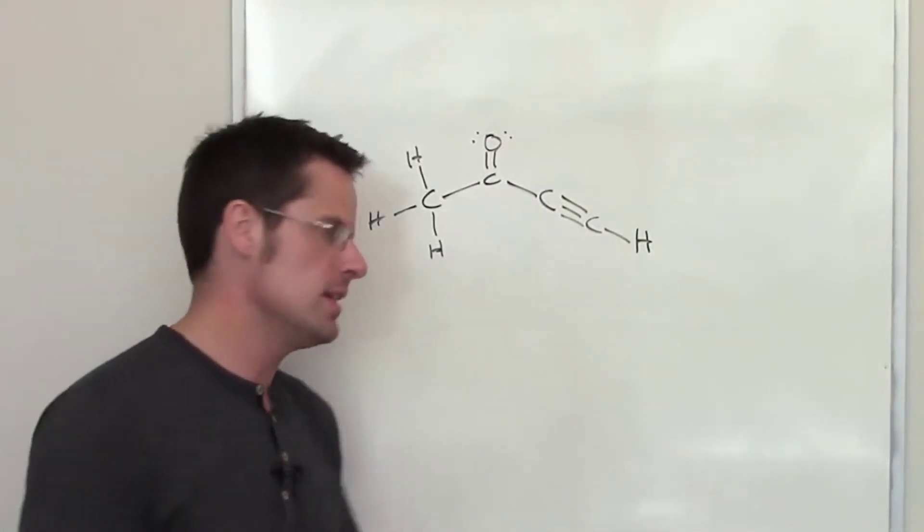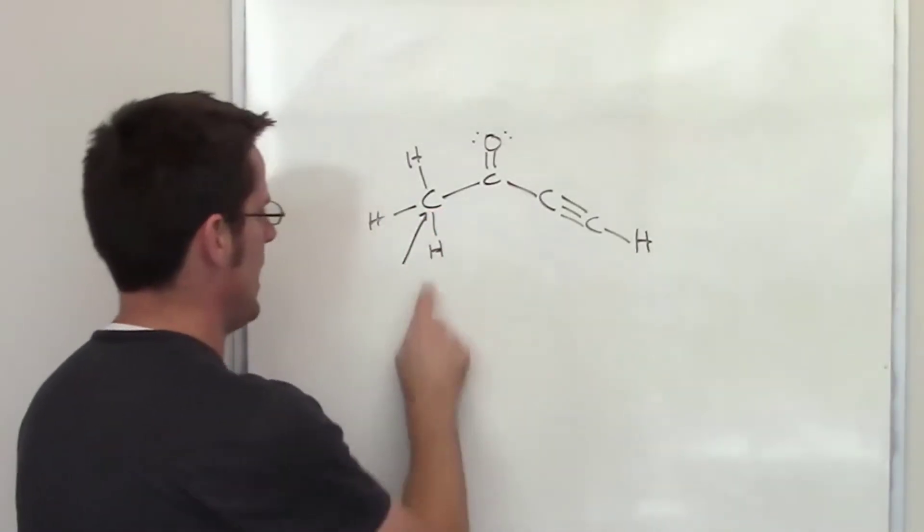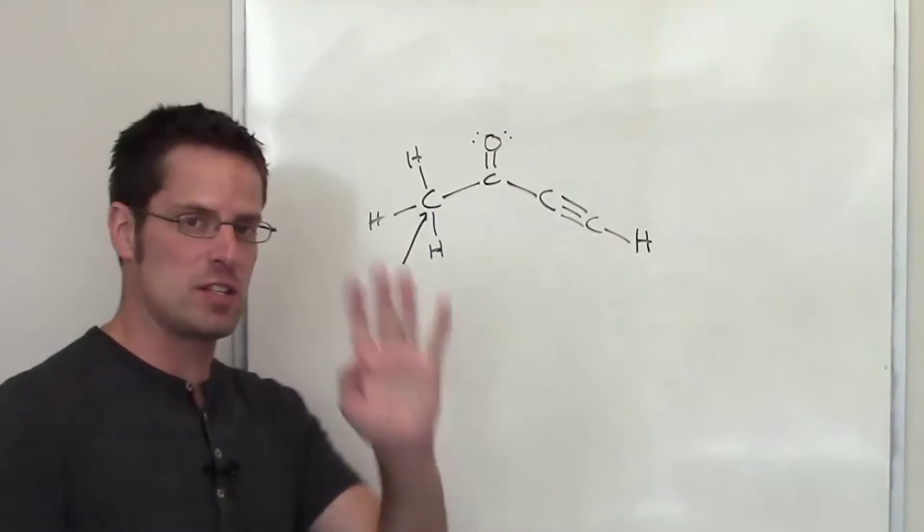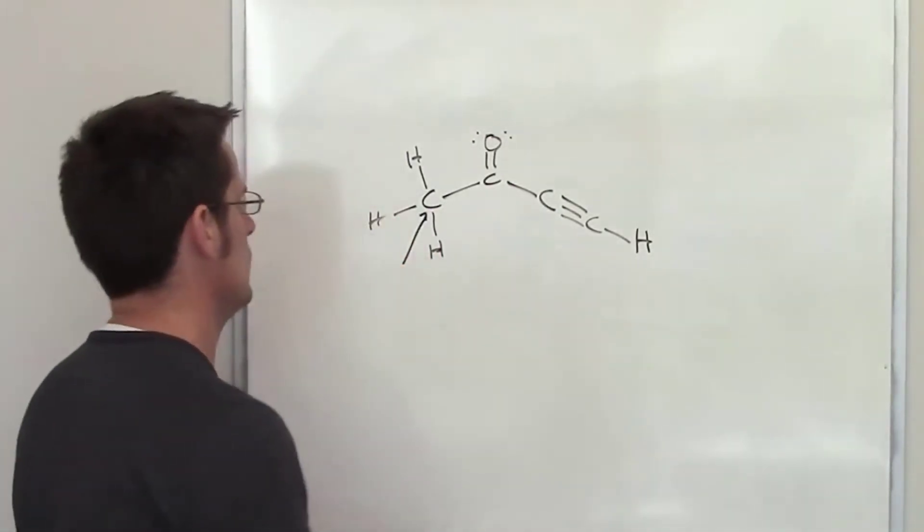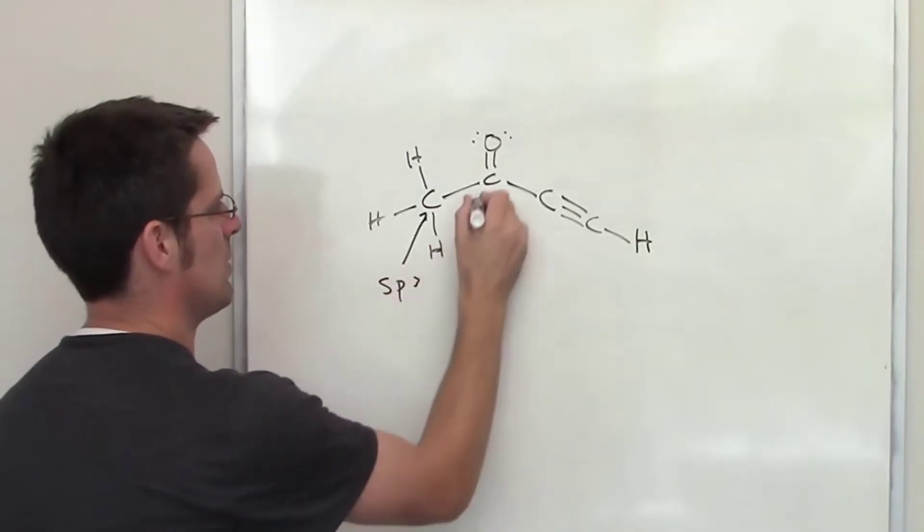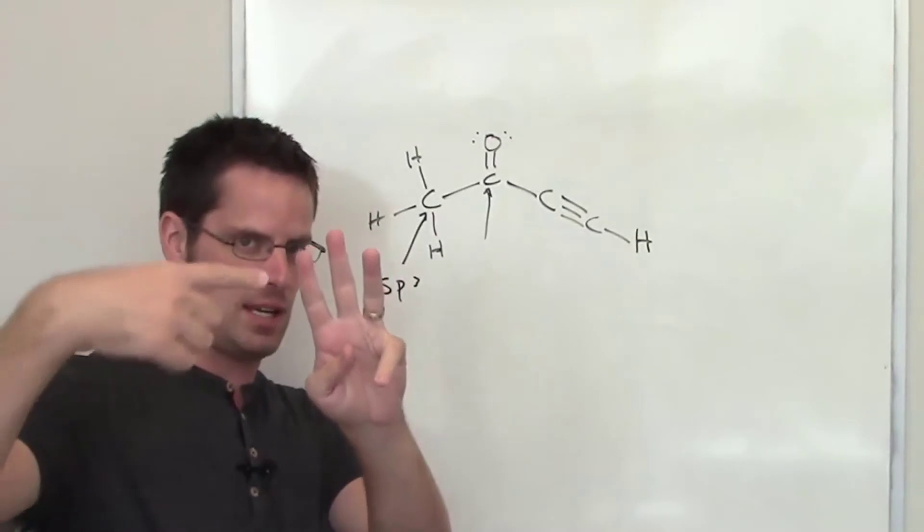are the carbons and the oxygens. Let's take a look at each one. This carbon right here has a hydrogen, a hydrogen, hydrogen, and a carbon around it. That's four things, so its hybridization is sp3. We'll write that down. This carbon right here has a carbon, a carbon, and an oxygen around it. That is three things, so it is sp2.